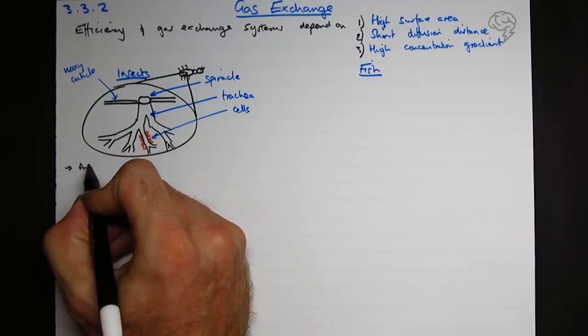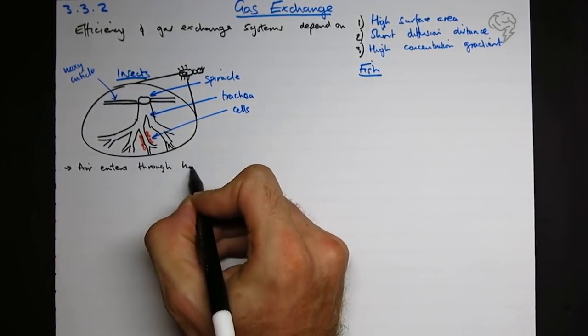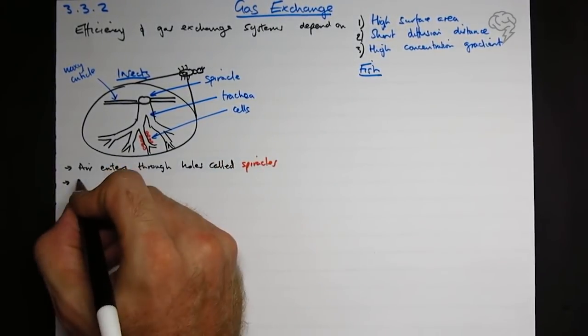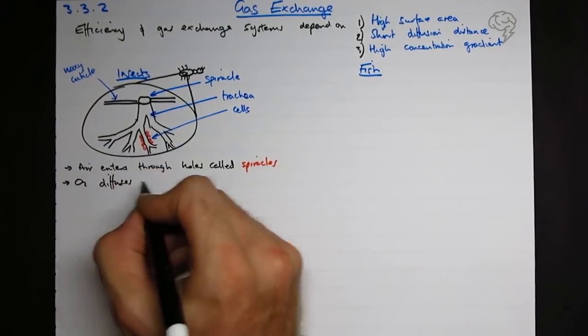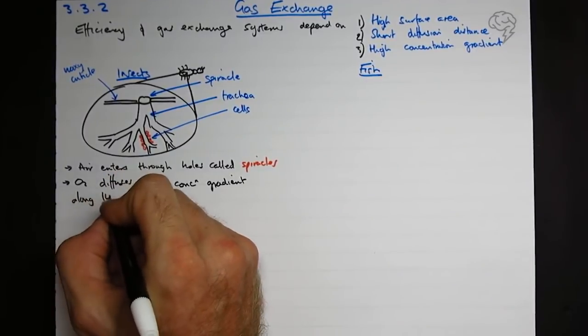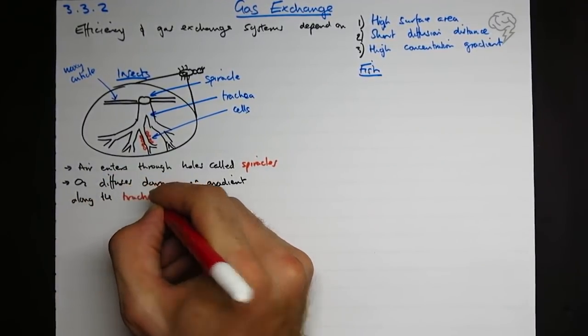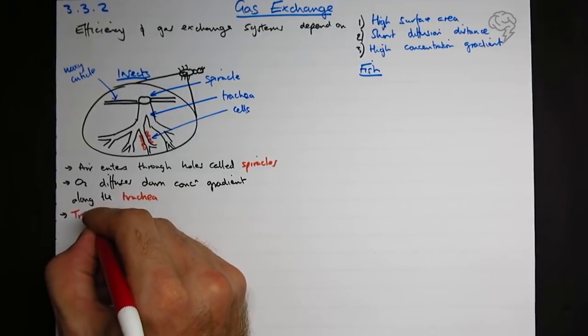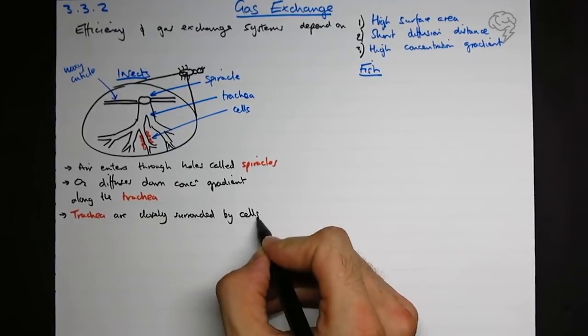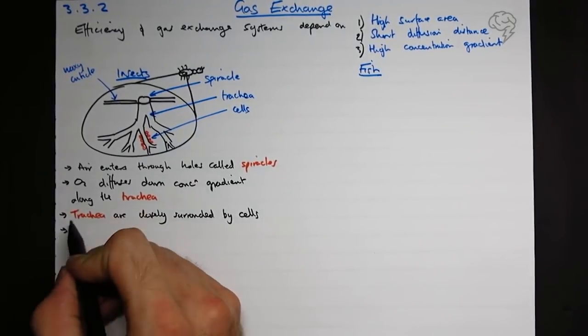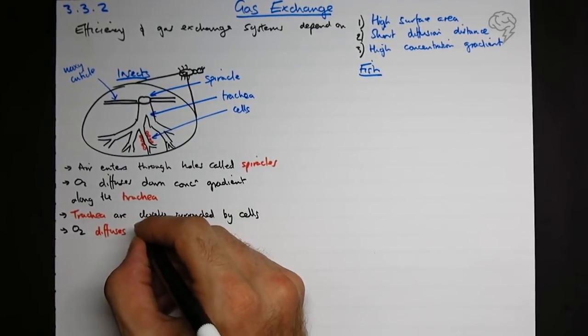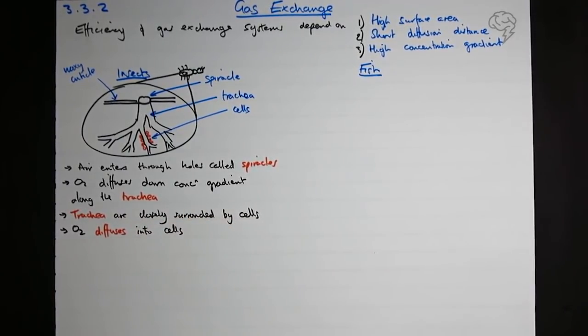Okay, so those are the things we need to know about the structure, and now let's put that into some notes. So air enters through holes called spiracles. Oxygen diffuses down the concentration gradient along the trachea, which are basically the pipes. The trachea are closely surrounded by cells, and then oxygen diffuses into the cells. Put diffusion in red - it's pretty key that you know it is diffusion.